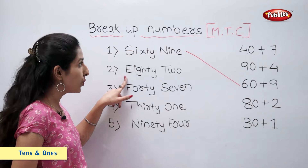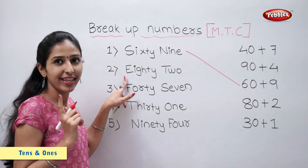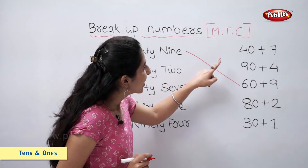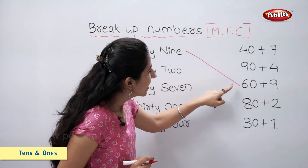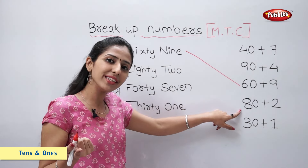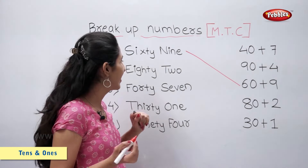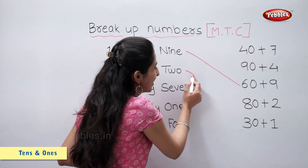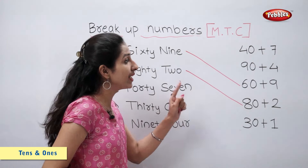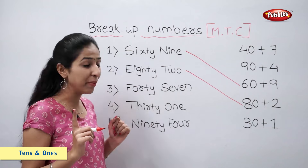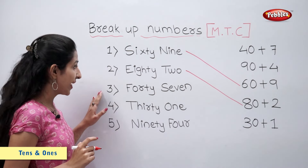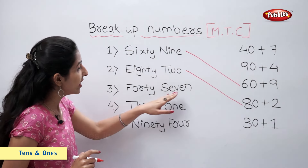Next is 82. Let's find 82. 82 is 80 plus 2. Let's match — 80 plus 2 is number 82.